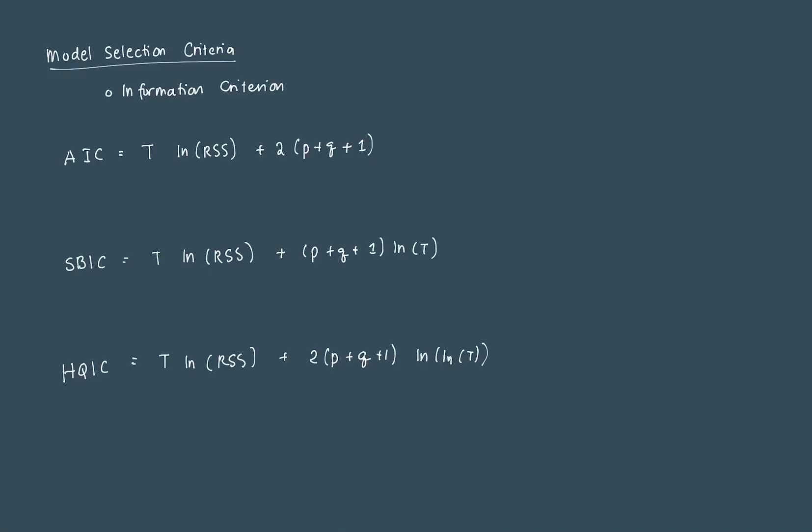In particular we're going to focus on three: the Akaike Information Criterion or AIC, the Schwarz-Bayesian Information Criterion which is SBIC, and the Hannan-Quinn Information Criterion which is HQIC.